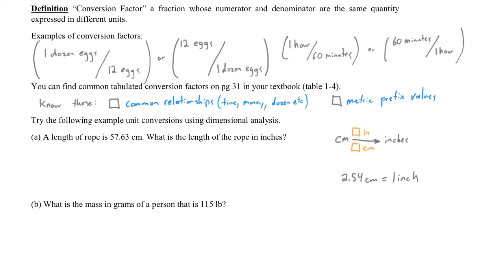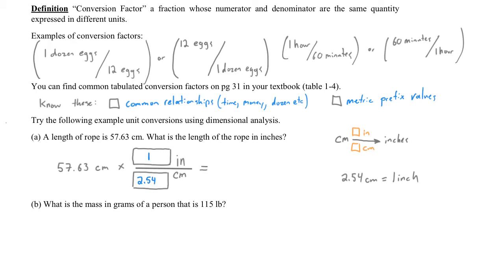Let's set up our dimensional analysis with the starting point of 57.63 centimeters. Next, we place the conversion factor with inches on the top — that's our destination — and centimeters on the bottom, our origin. We fill in the numerical values: it's 2.54 centimeters for every 1 inch, so we write 2.54 on the bottom and 1 on the top. On your calculator, type in 57.63, multiply by 1, hit the equal sign, and divide by 2.54.